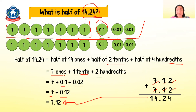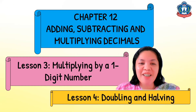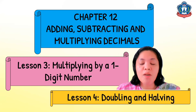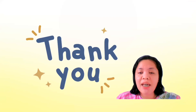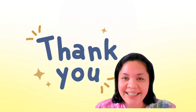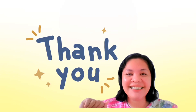So P5, that's how to find the doubles and halves of decimal numbers. If you have other ways to find doubles and halves, you can share during our Zoom meeting. That's all for Lesson 3: Multiplying by a One-Digit Number, and Lesson 4: Doubling and Halving. I hope you learned a lot. Thank you for watching, P5. Always remember to stay safe and healthy. God bless everybody and have a great day. Bye!